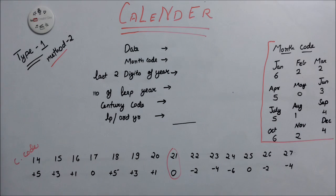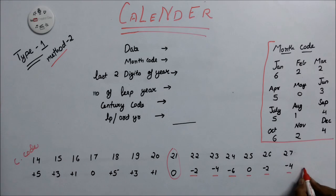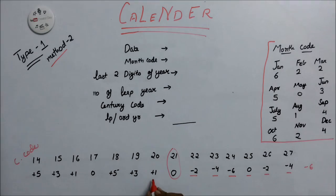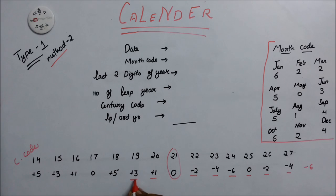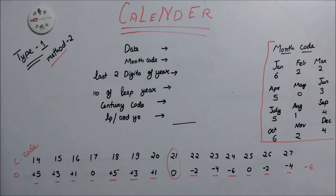On the right side of the current century we take minus 2, minus 4, minus 6, then 0, minus 2, minus 4, minus 6. On the left side we take plus 1, plus 3, plus 5, then 0, plus 1, plus 3, plus 5, then 0 again.